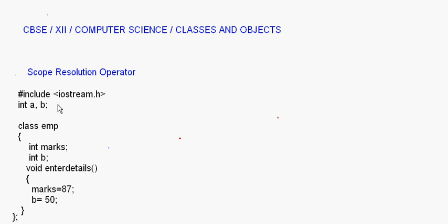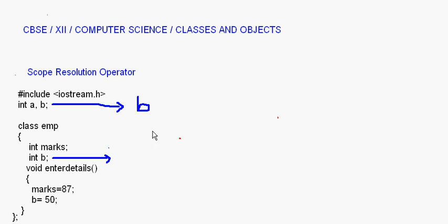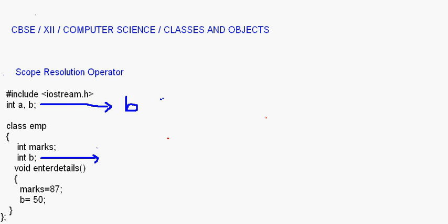Now, look at this point — int a, b has been declared here at the top. You can also see that b has been declared inside the class emp. So there are two variables with the same name. This b declared outside is a global variable, and the b inside the class is a local variable.